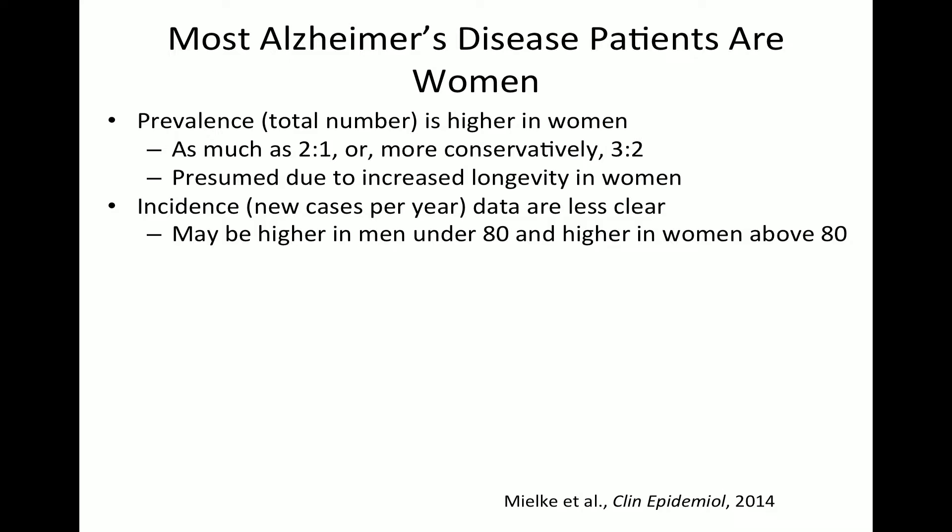Even here, there are many things wrapped up in these numbers: cardiovascular risk, things that differ between men and women that can affect the diagnosis of dementia, such as vascular dementia getting confounded with Alzheimer's.